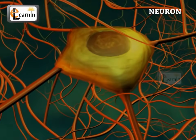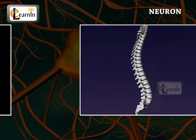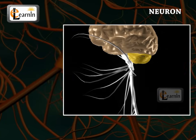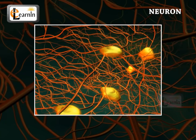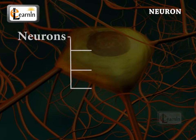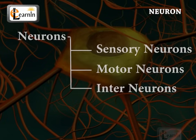Neurons are the basic constituents of the brain, vertebral spinal cord, the ventral nerve cord, and the peripheral ganglia, which is a mass of nerve cell bodies. Neurons can be categorized into three types: sensory neurons, motor neurons, and interneurons.